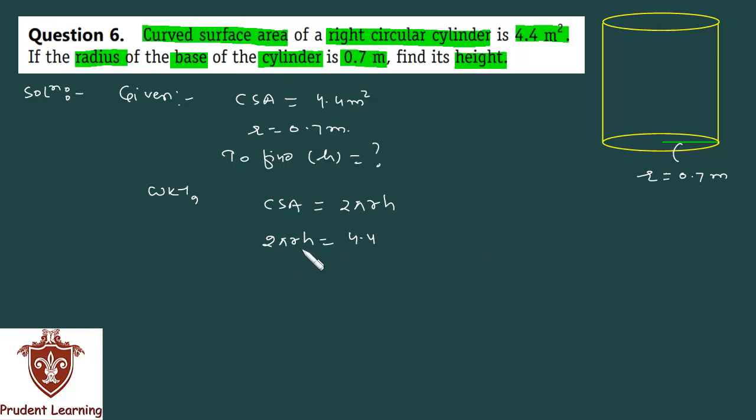Find what? H. I will keep H here. 2πR is the denominator. H equals 4.4 upon 2πR. Values put. H will be 4.4 upon 2 into π. You have 22 upon 7. 1 ka 7 upar chalye gaya. And R you have 0.7.